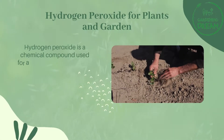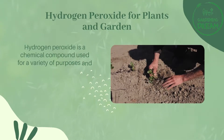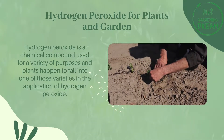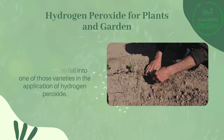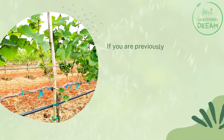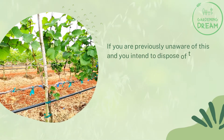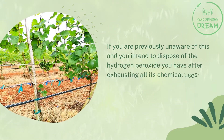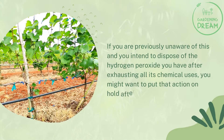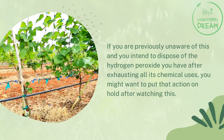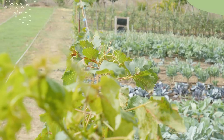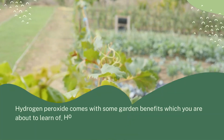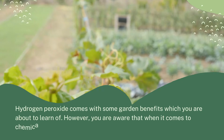Hydrogen peroxide is a chemical compound used for a variety of purposes, and plants happen to fall into one of those varieties. If you are previously unaware of this and you intend to dispose of hydrogen peroxide after exhausting all its chemical uses, you might want to put that action on hold after watching this. Hydrogen peroxide comes with some garden benefits which you are about to learn of.